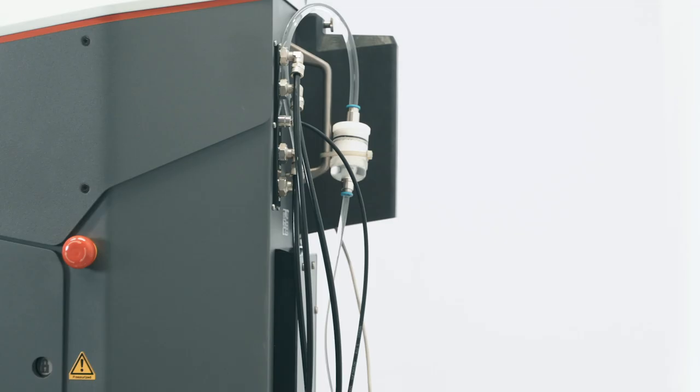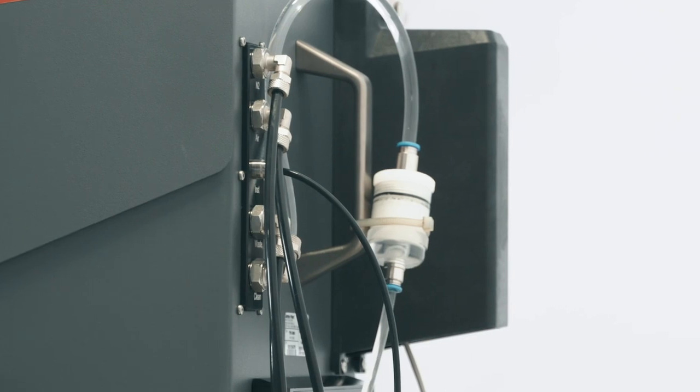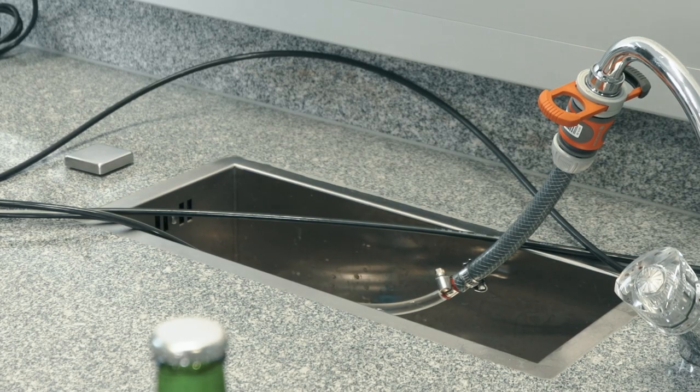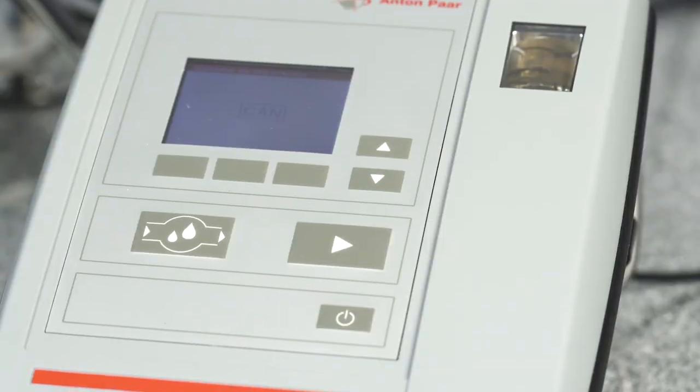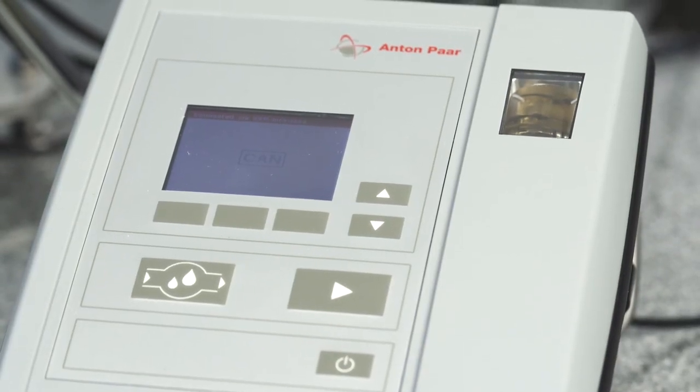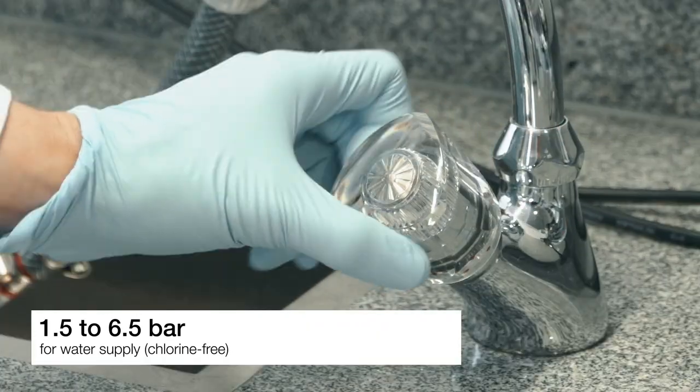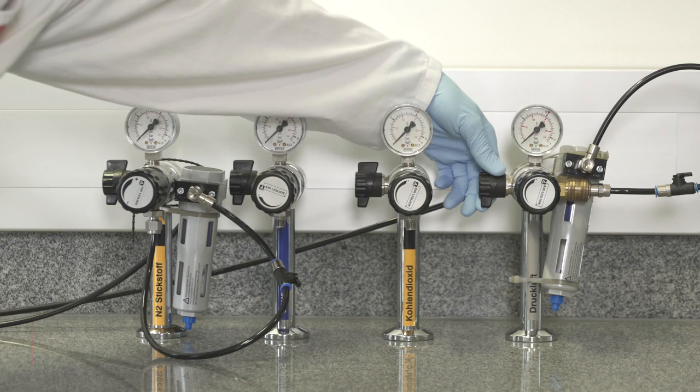In addition, ensure that all hoses are tightly fixed and that the waste hose and the external instrument outlet hose lead into a big waste container or sink. If CarboQC is connected, the instrument hose must lead to the inlet of CarboQC. After that, activate the water and gas supplies and you're ready to go.